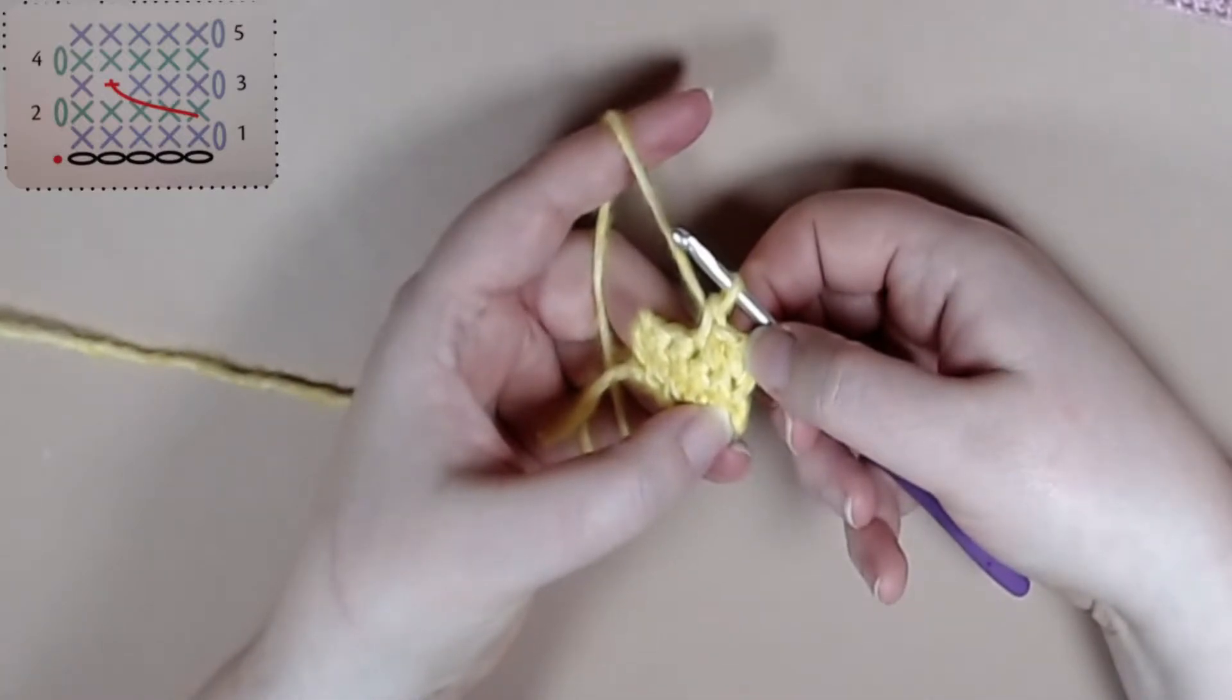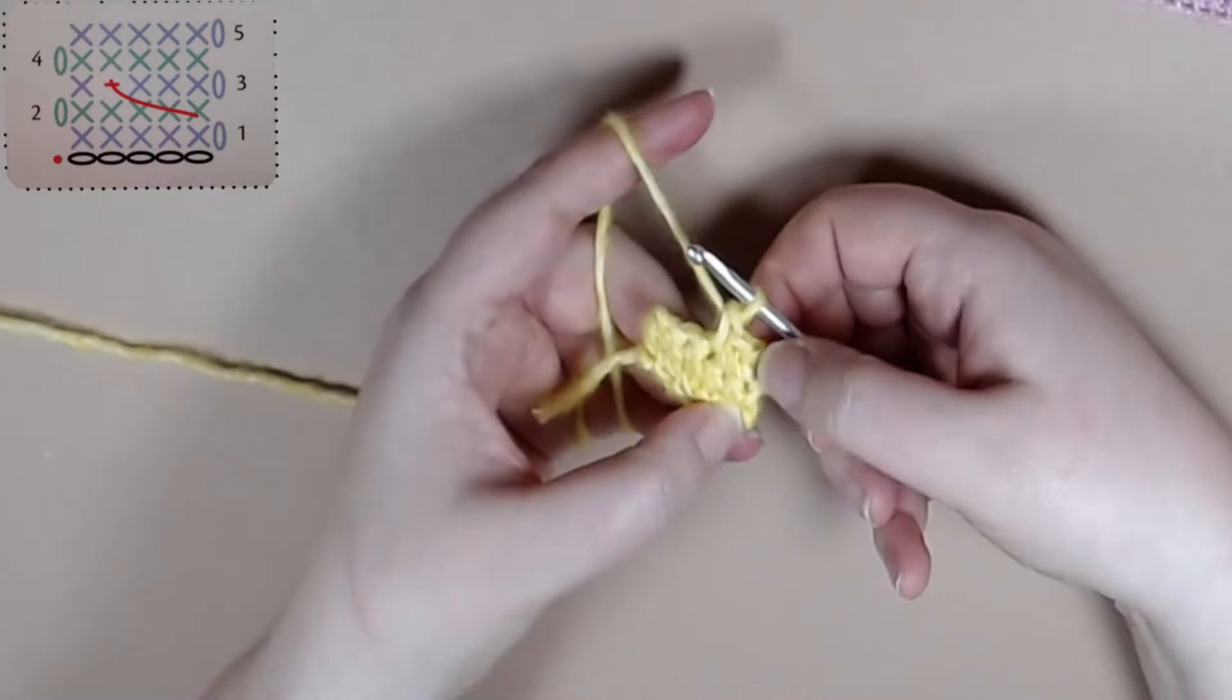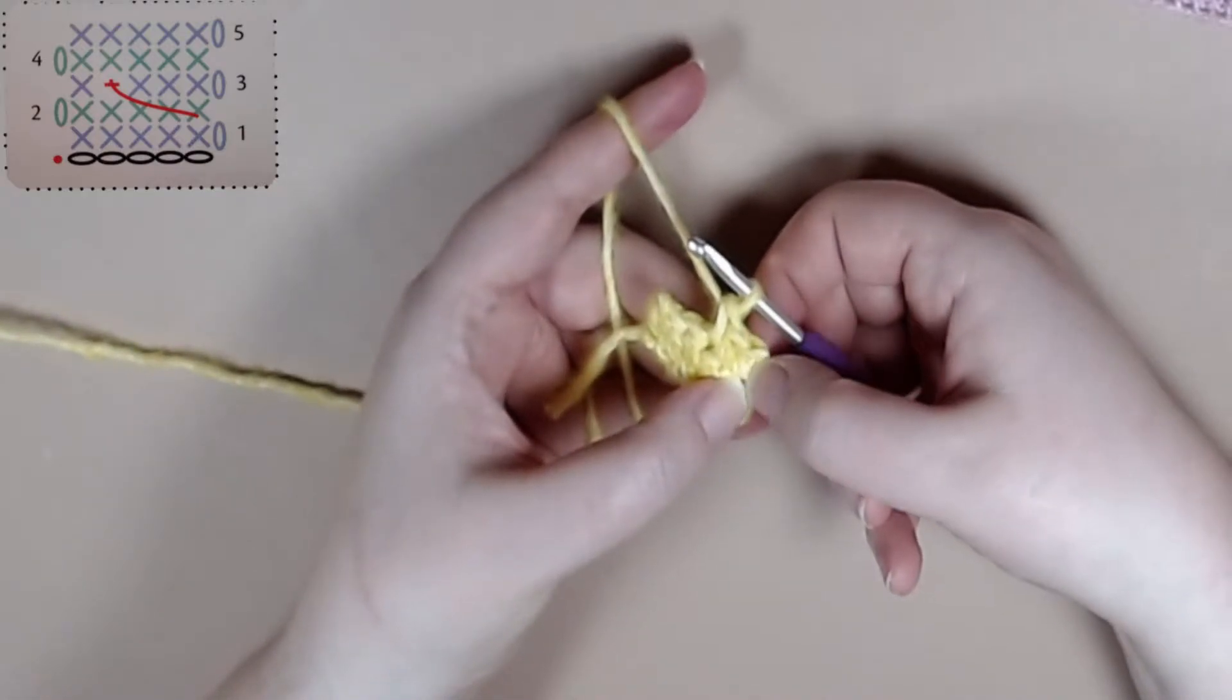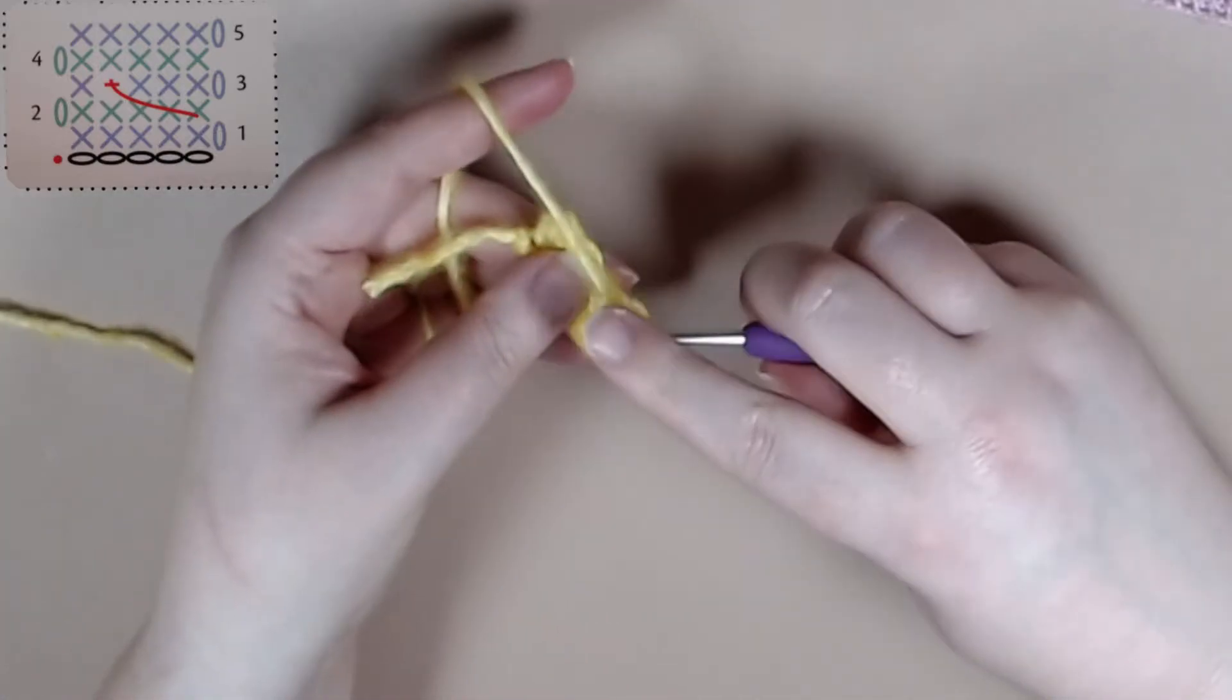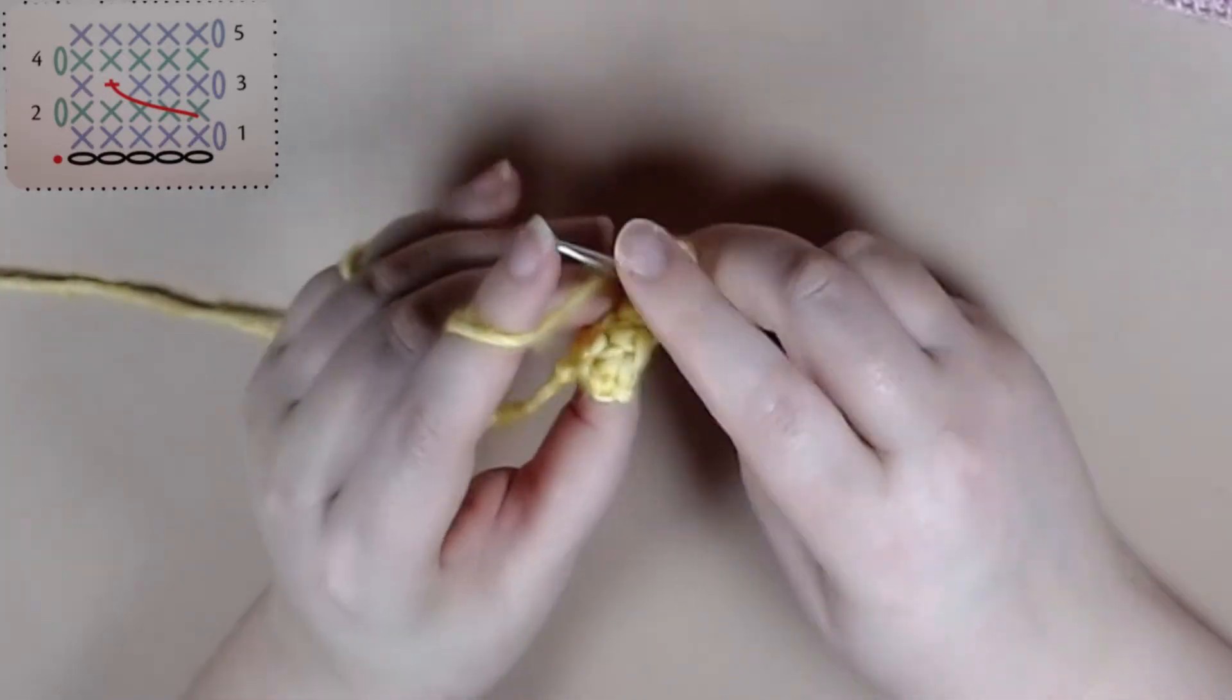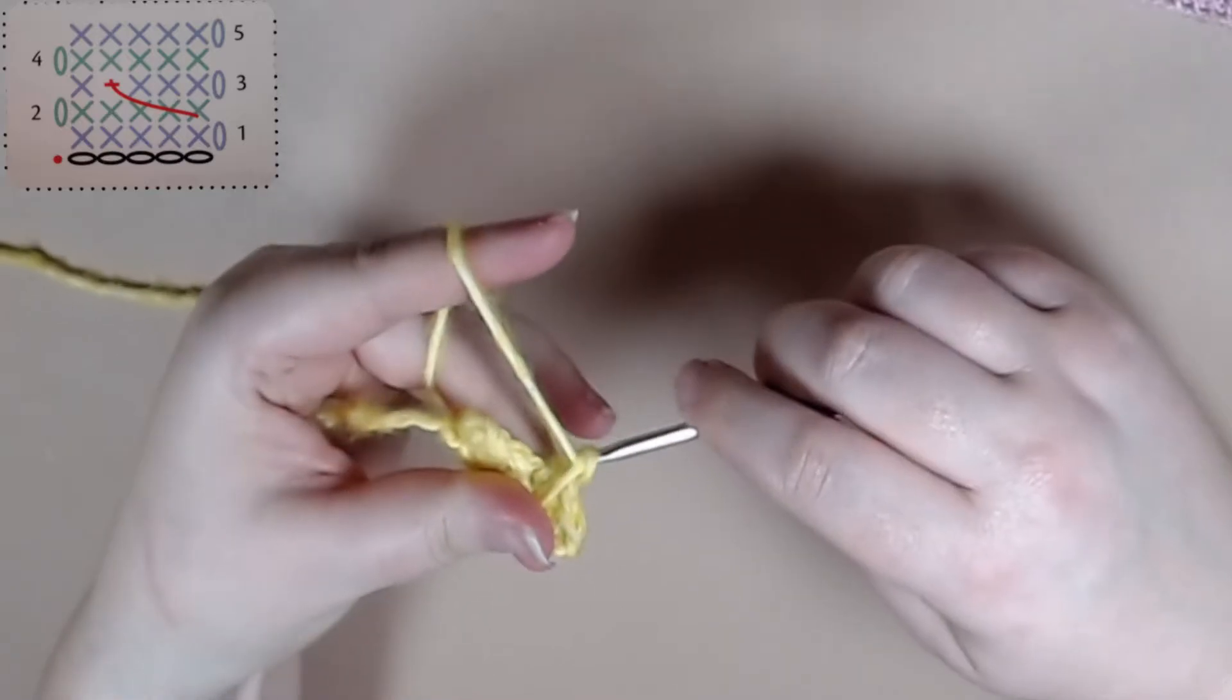So you'll see where that gap is from the previous row that you've crocheted in. Right there. So we're just going to insert our hook and do a single crochet, so it's a yarn over, pull through, and then pull through for a single crochet.